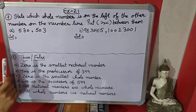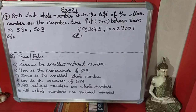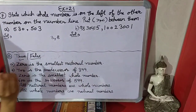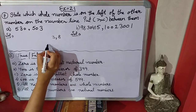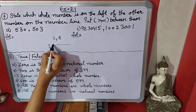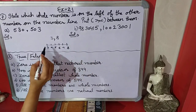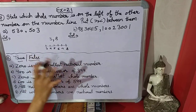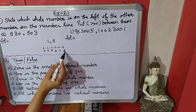First of all, you have to tell which number is on the left of the other number on the number line. Let's take one example. If we have two numbers 3 and 8, and you have to tell which number is on the left side using a number line. If we draw the number line, the smaller number comes first: 3, 4, 5, 6, 7, 8. So the small number always comes on the left side.